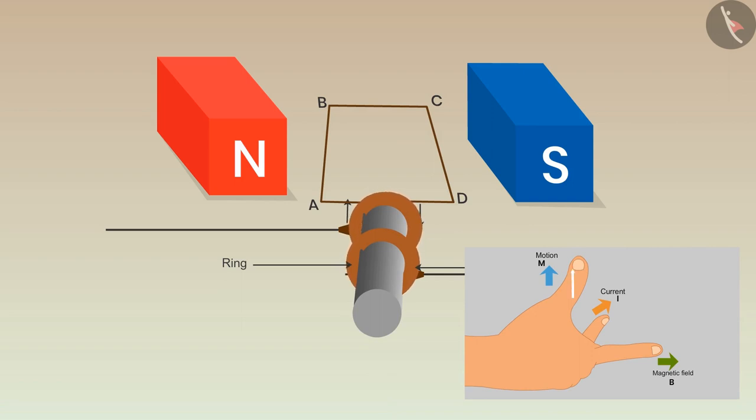The index finger represents the direction of the magnetic field. Then the middle finger will show the direction of induced current on the arm AB, which is inwards in this case.